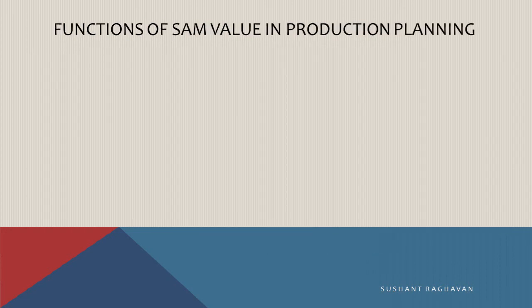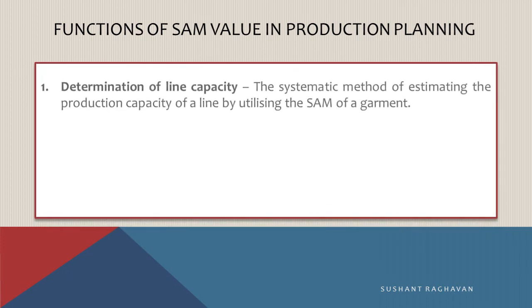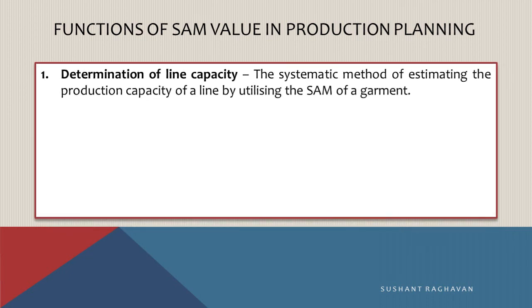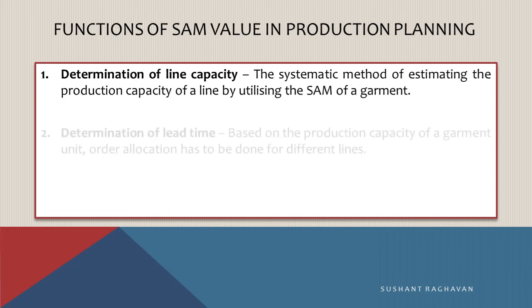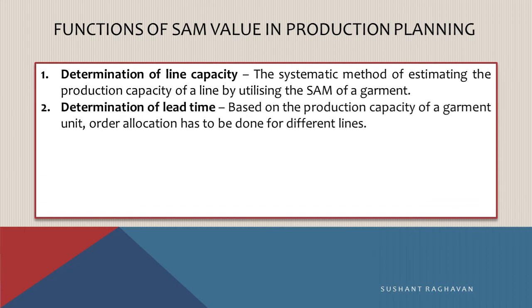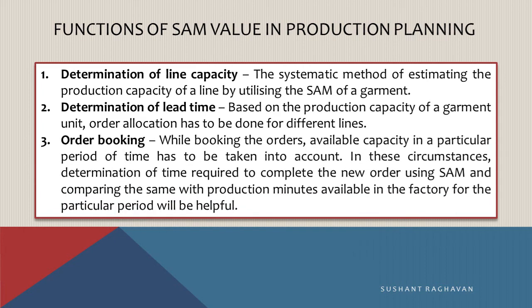Functions of SAM value in production planning. Determination of line capacity: the synthetic method estimates the production capacity of a line by utilizing the SAM of a garment. Determination of lead time: based on the production capacity of a garment unit, order allocation has to be done for different lines. Order booking: while booking orders, available capacity in a particular period of time has to be taken into account. In these circumstances, determining the time required to complete the new order using SAM and comparing it with production minutes available in the factory for the particular period will be helpful.